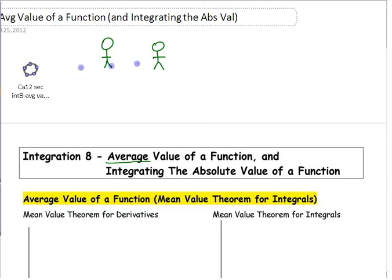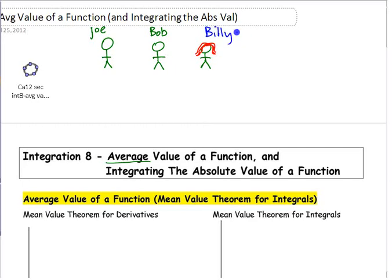Let's say we have three people — Joe, Bob, and a girl named Billy. When you first learn to find an average, whether it's three people or more, the process is the same: add all the values and divide by the count.